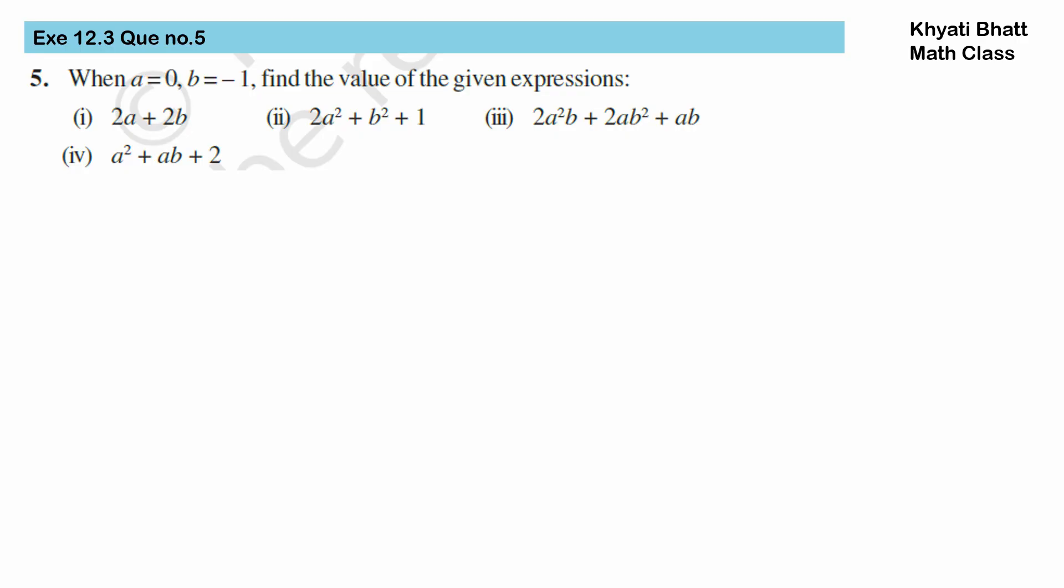Exercise 12.3, question number 5. When a equals 0 and b equals minus 1, find the value of the given algebraic expressions.